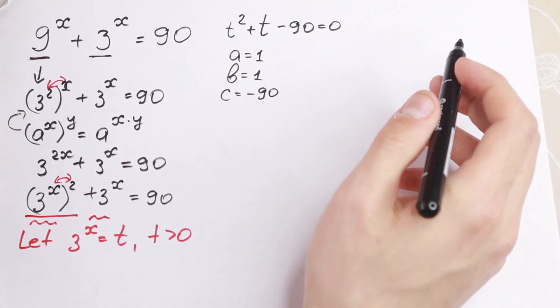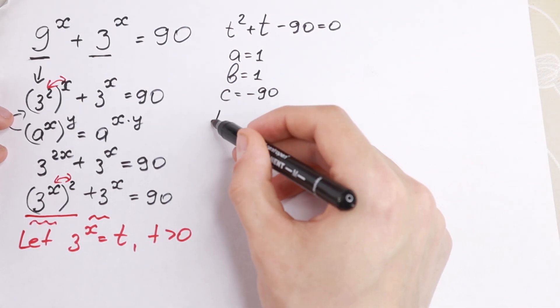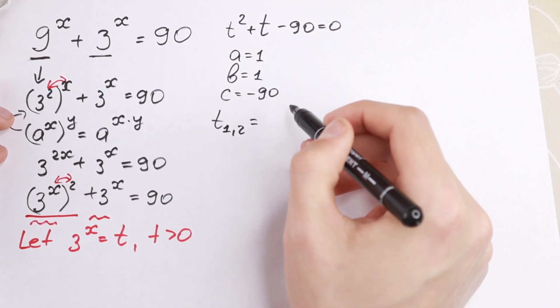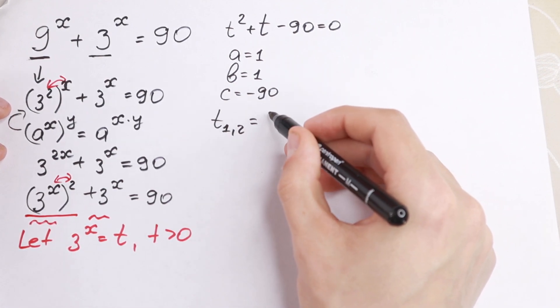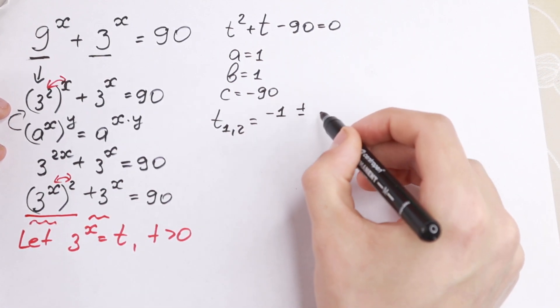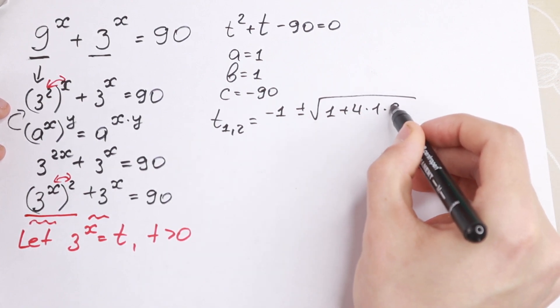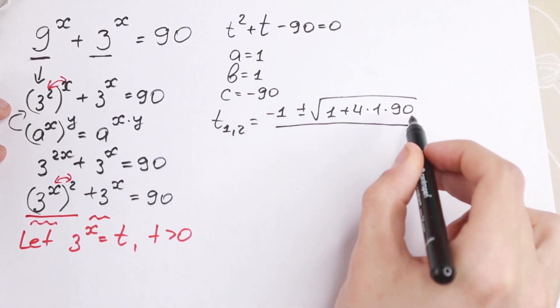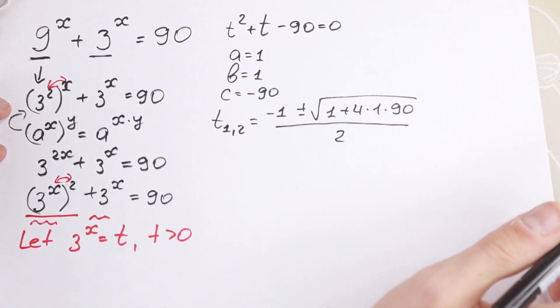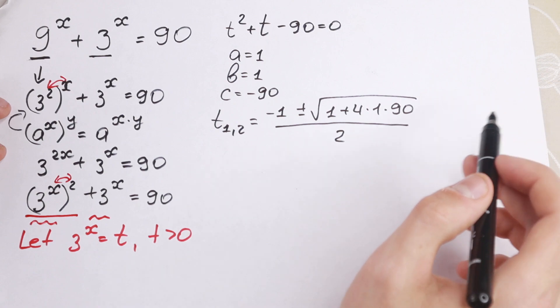And it's not hard to put all of these elements in our formula. So t1 and 2 will be equal to minus b minus 1 plus minus square root of 1 plus 4 times 1 times 90. And of course dividing by 2. And let's find this answer.